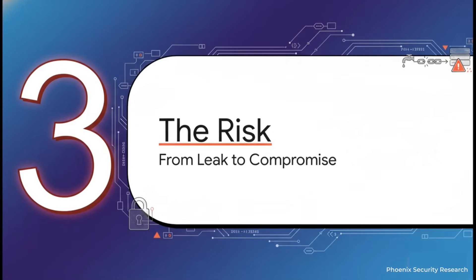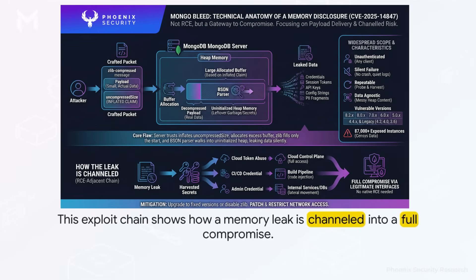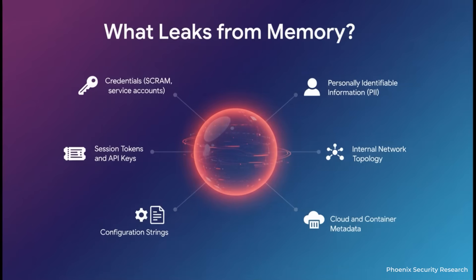So why is this such a big deal? You might think it's just a memory leak. But in modern cloud infrastructure, a memory leak like this is often just the first step in a full compromise. We're about to see how this becomes what we call an RCE-adjacent threat. This is the modern attacker's playbook: they use the memory leak to fish for secrets out of the server's heap — not just database credentials, but cloud tokens, CI/CD secrets, anything. Then they take those secrets and pivot, authenticating to completely different systems like the AWS console or a Kubernetes cluster, and get code execution through totally legitimate authenticated APIs. The end result is the same as RCE, but the path is much stealthier.